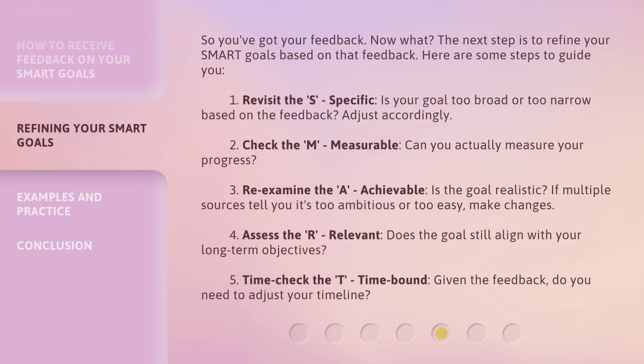So you've got your feedback — now what? The next step is to refine your SMART goals based on that feedback. Here are some steps to guide you. Number one: revisit the S — Specific. Is your goal too broad or too narrow based on the feedback? Adjust accordingly.